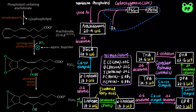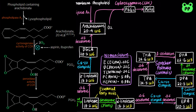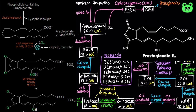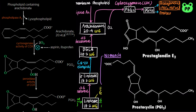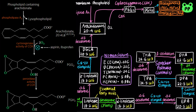Prostaglandin H2 then serves as a precursor to other prostaglandins, including prostaglandin E2, D2, F2-alpha, and prostaglandin I2, which is also known as prostacyclin. Mammals have two isozymes of COX. COX-1 is responsible for the synthesis of the prostaglandins that regulate secretion of gastric mucin, which protects our gastrointestinal tract from acid and microbes. Whereas COX-2 is responsible for the synthesis of prostaglandins that mediate inflammation, pain, and fever.